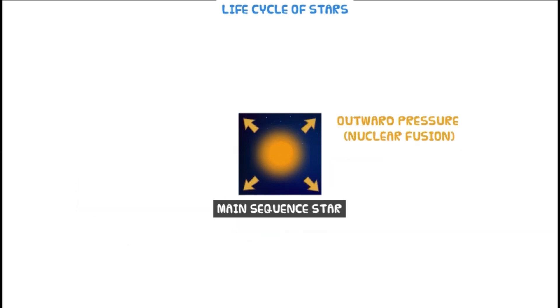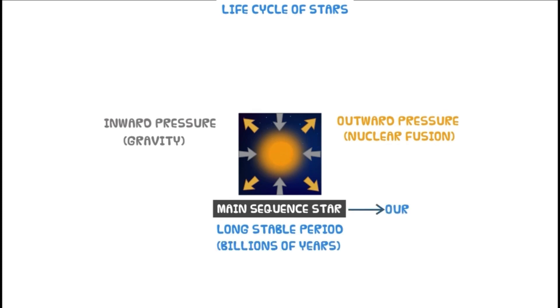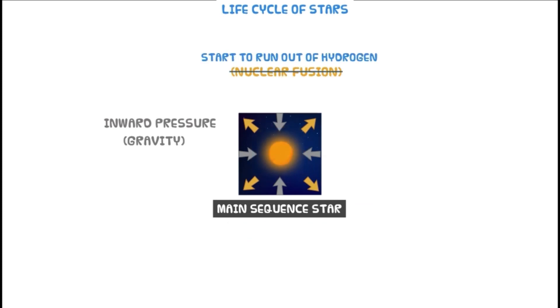The main sequence star exerts an outward pressure because of nuclear fusion and an inward pressure because of gravity, which makes the star stable for a longer period of time. Our sun is in the state of a main sequence star right now.